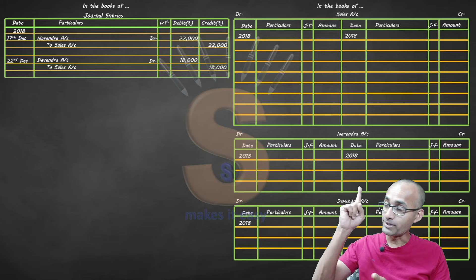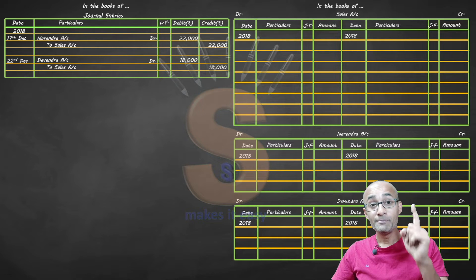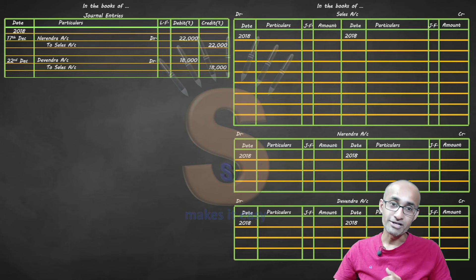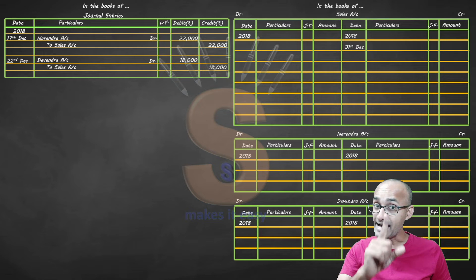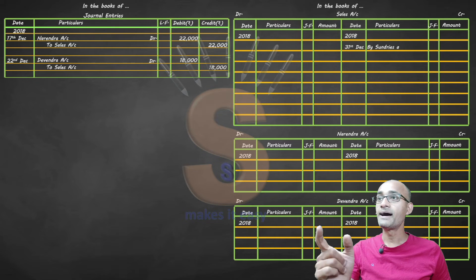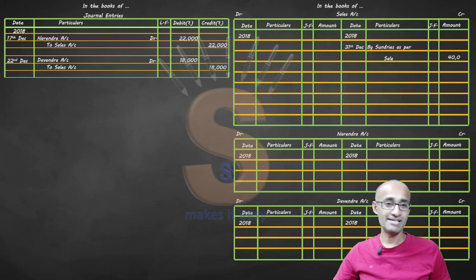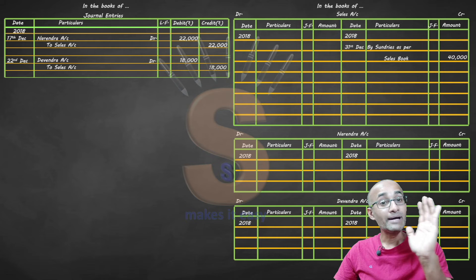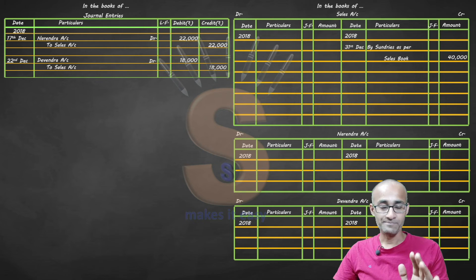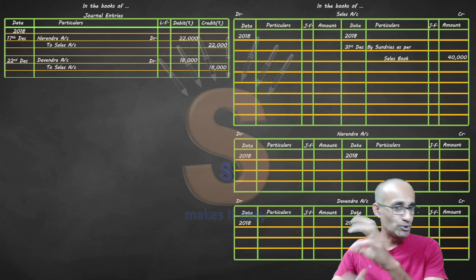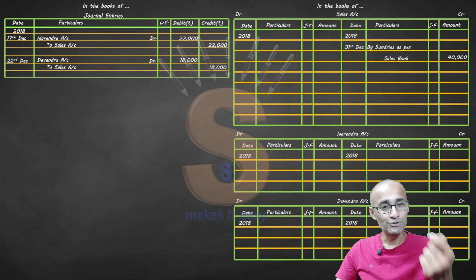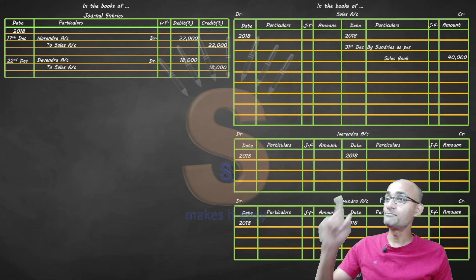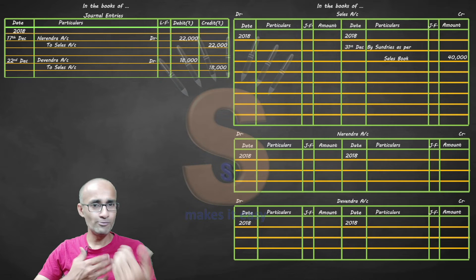Now, how do we write the sales ledger? Sales is always on the credit side. On the last date, we write: 'By sundries as per sales book — 40,000.' You don't need to write each individual sale separately because your time is wasted. You just write the total as a summary: 'Sundries as per sales book,' and then the sales book total.